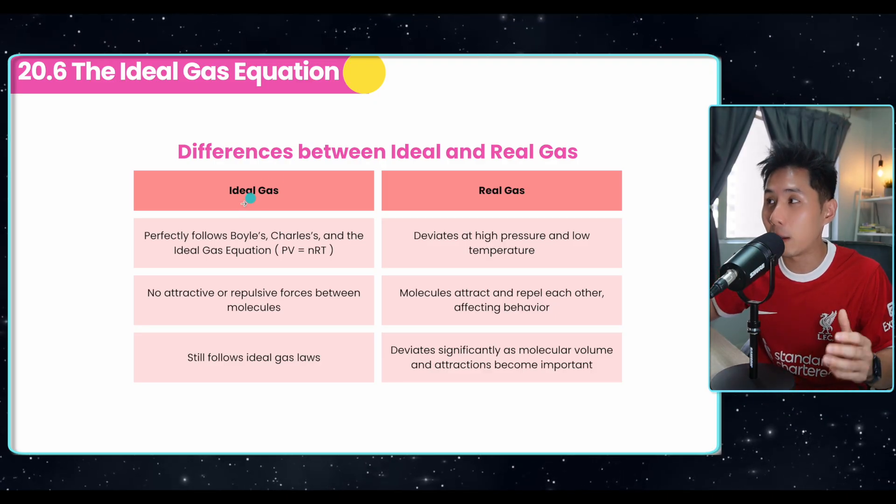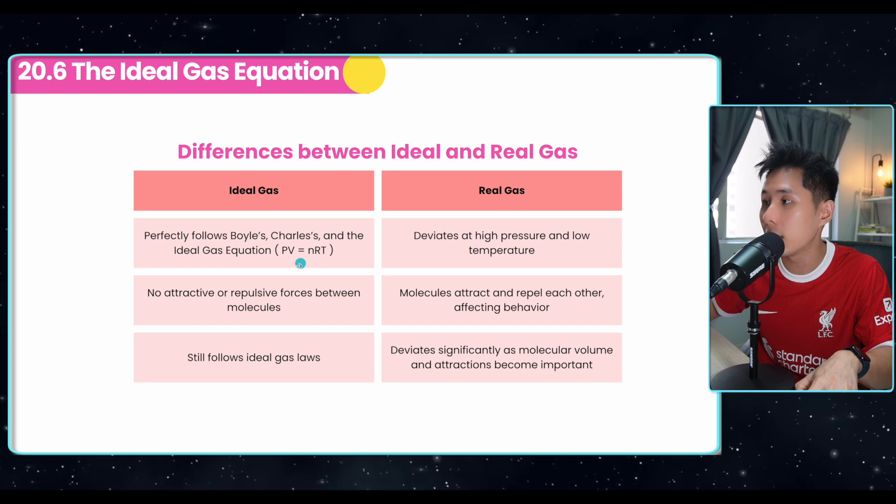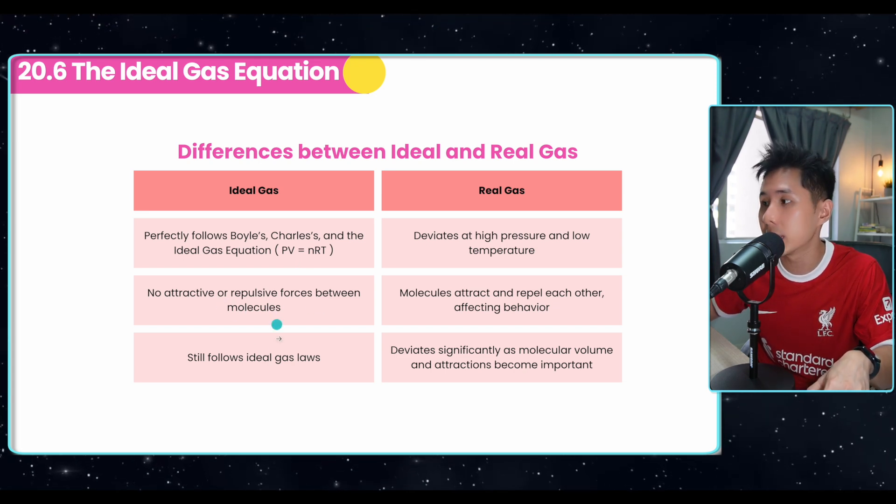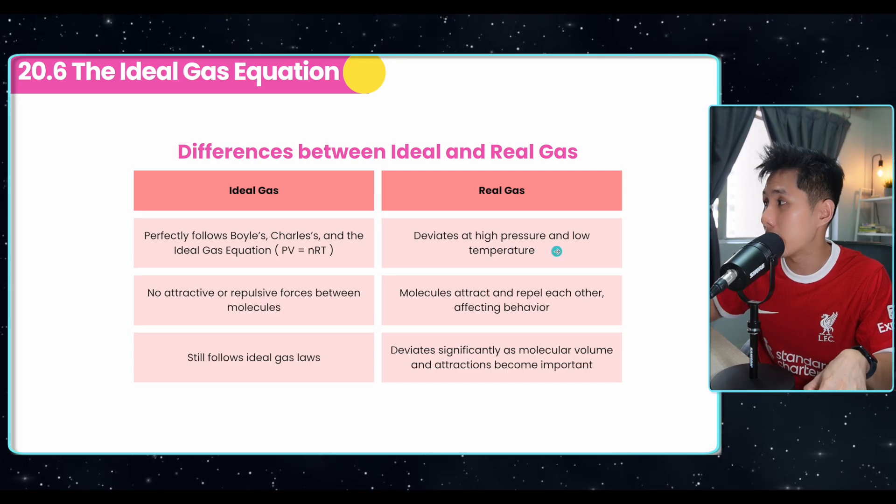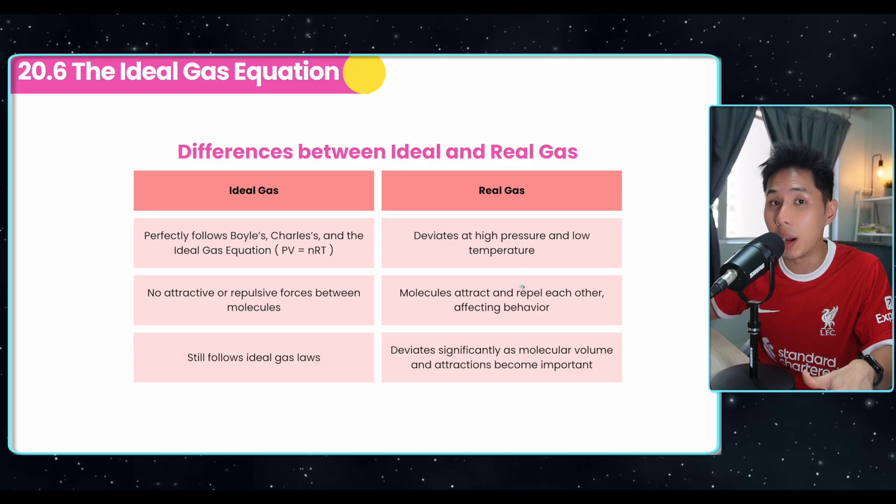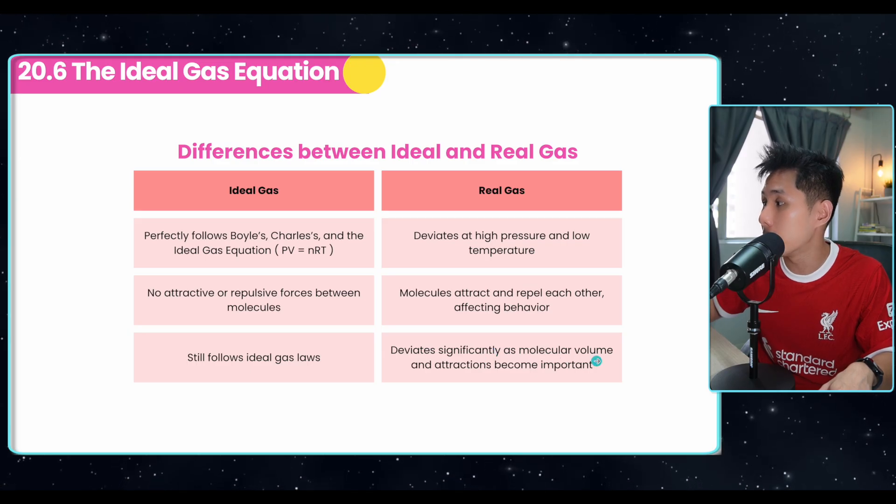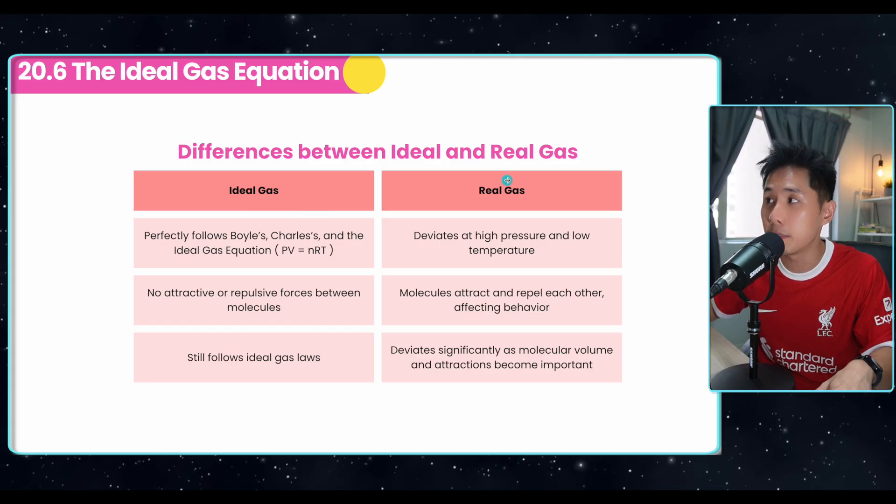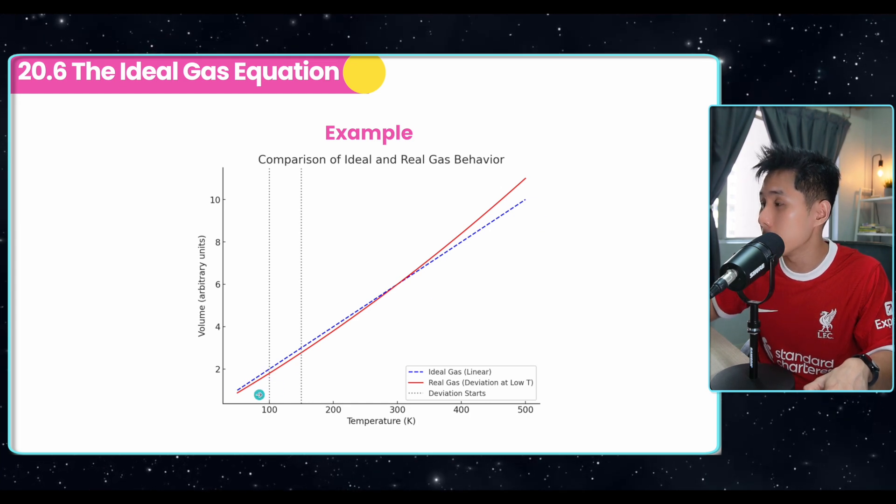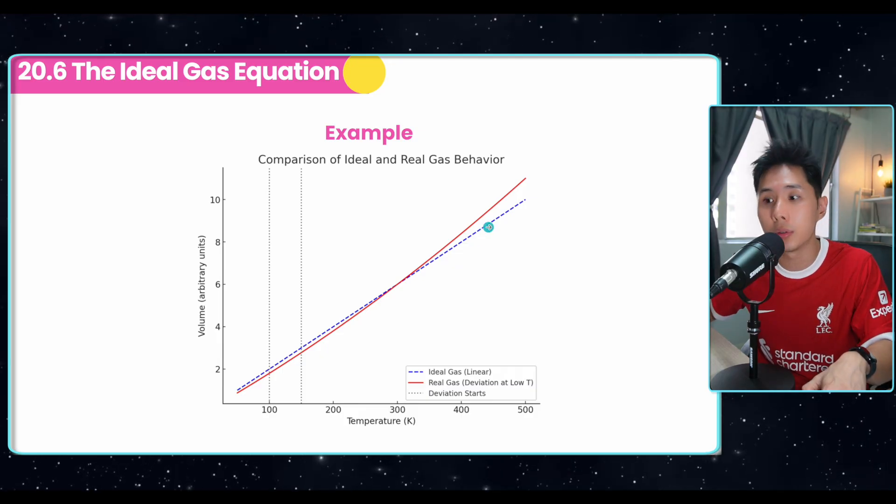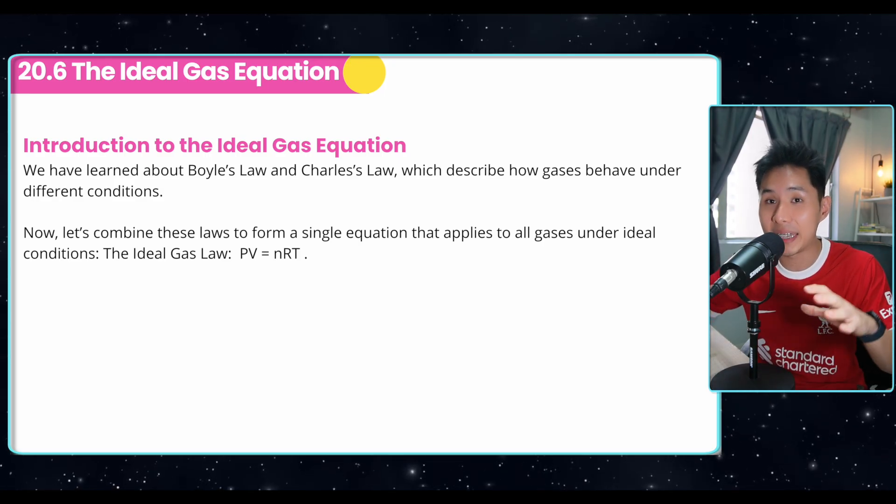And that is when we assume that those gas are ideal in that they perfectly follow Boyle's and Charles Law and the next equation that we'll be learning in a while. And we assume that there's no attractive or repulsive force between molecules and they still follow ideal gas law. But then we have to understand that real gas, they deviates at high pressure and low temperature, meaning there are other factors that affect these physical quantities. So molecules might also attract and repel each other, affecting behavior. And they deviate significantly as molecular volume and attraction becomes important. So that's just a differentiation between what ideal gas and real gas is.